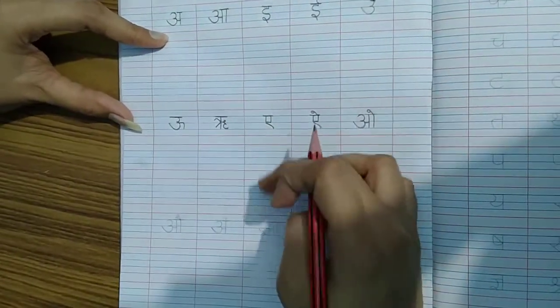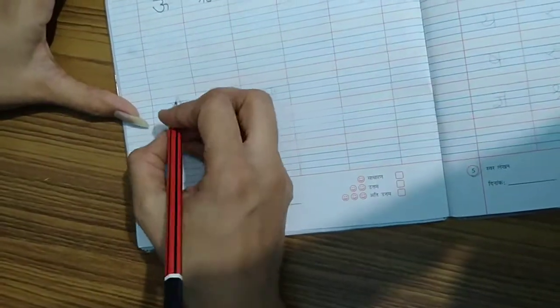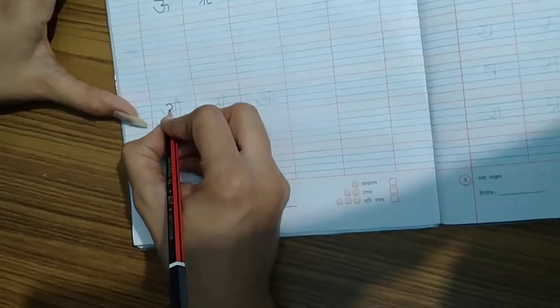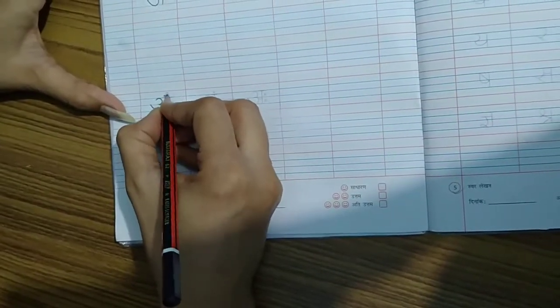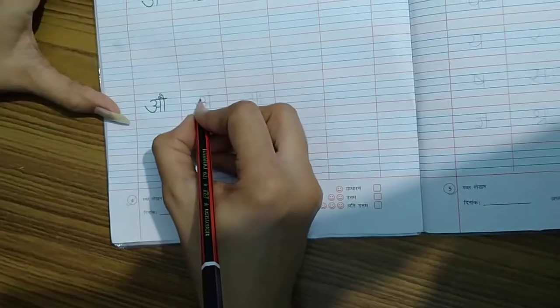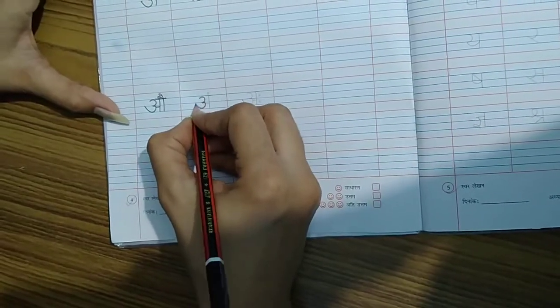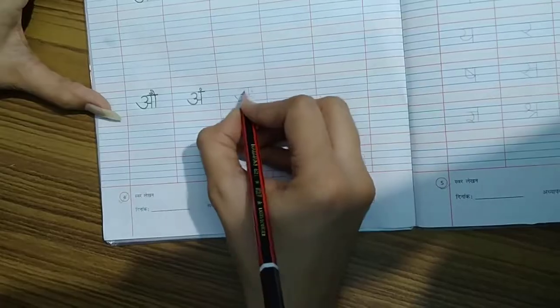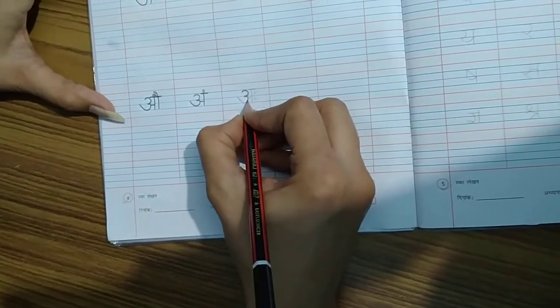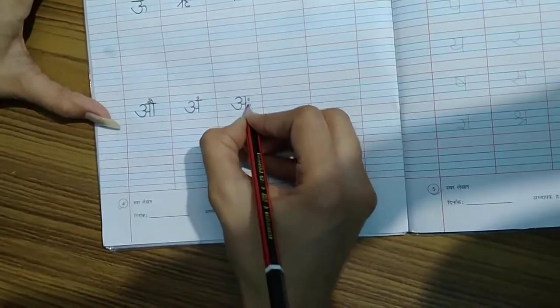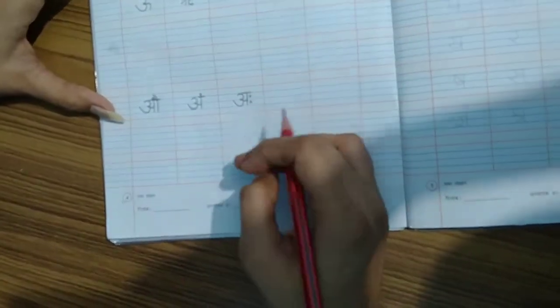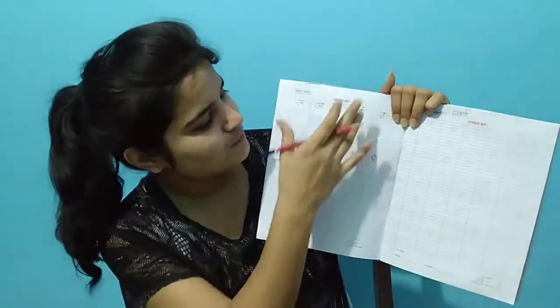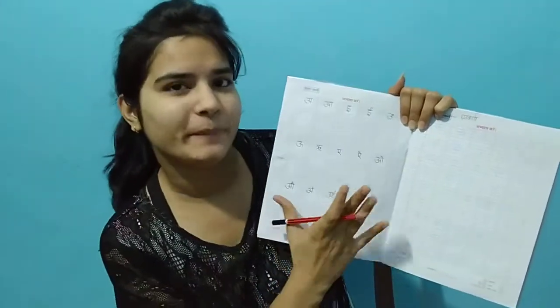This is how you write down lines. Now we are going to write in these lines. I will write the whole page of our school group.